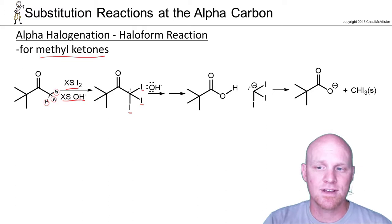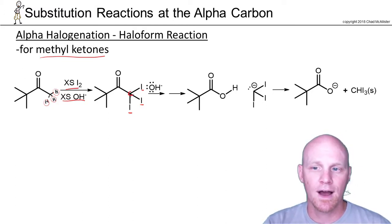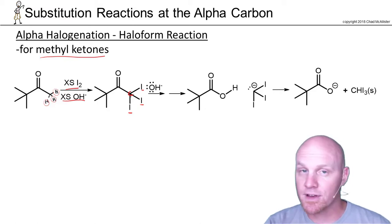It turns out this carbon right here, normally carbon is not going to be a good leaving group, but carbon attached to three halogens is electron-withdrawing enough to stabilize it enough that it can leave and actually be a stabilized carbanion. Not the most stable thing in the world, don't get me wrong, but it'll work.